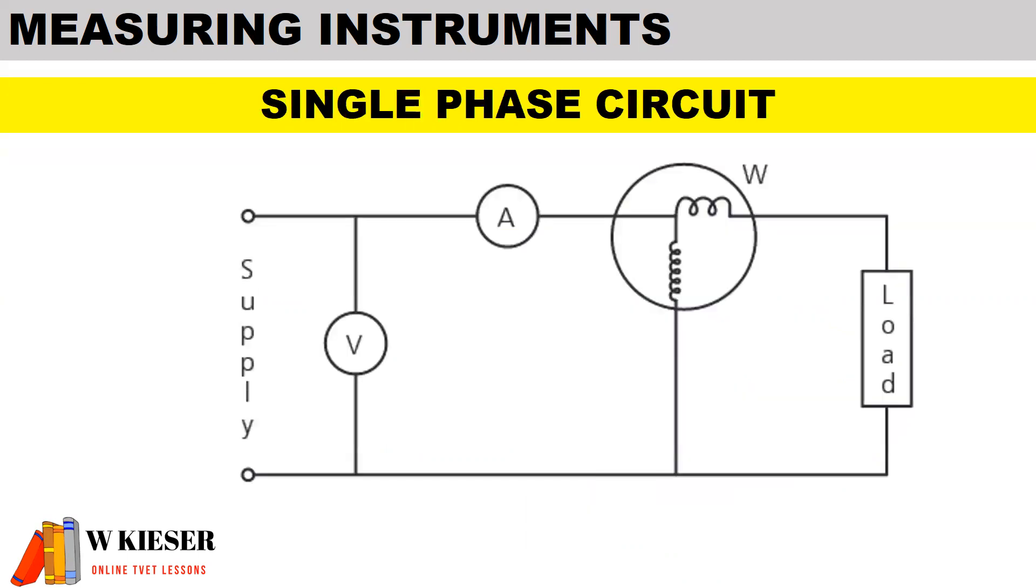For a single phase circuit, we will connect a voltmeter in parallel to the load. An ammeter would be connected in series to the load, and a wattmeter, which is used to measure the amount of energy consumed per hour, consists of two coils: the current coil connected in series to the load and the voltage coil connected in parallel to the load.